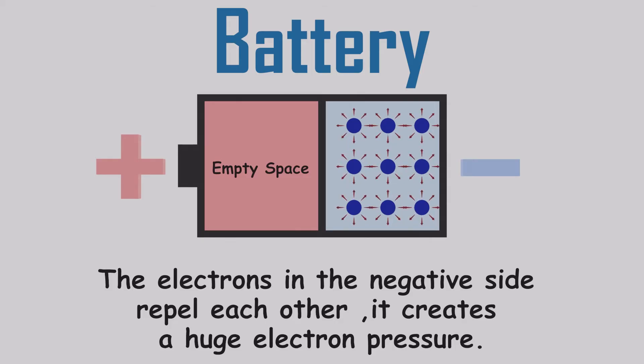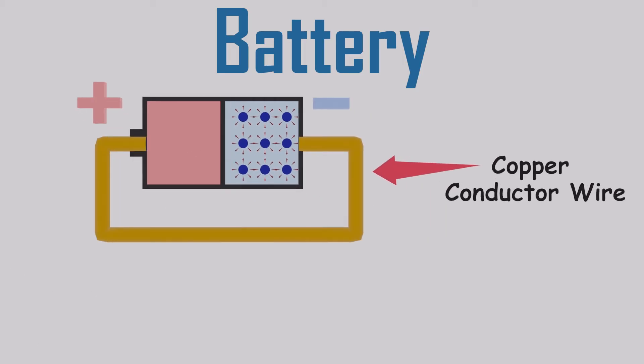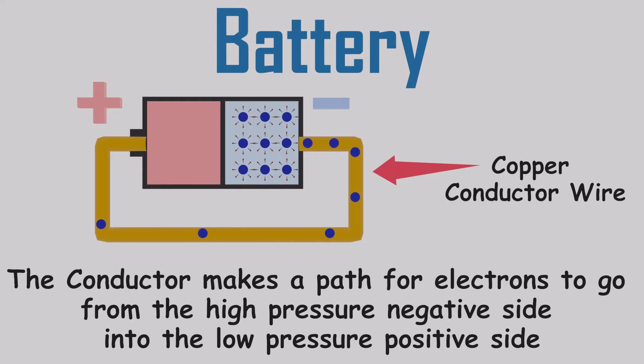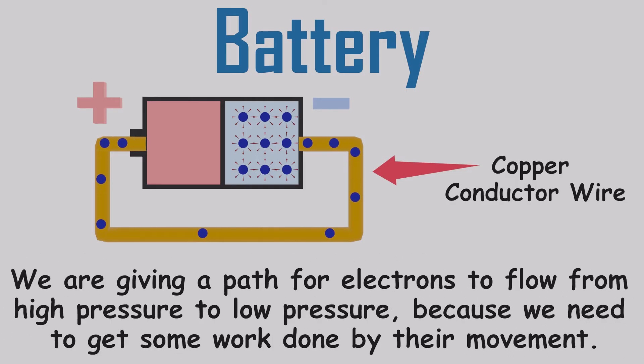As I mentioned earlier, electrons are repelling negative charges, so the electrons in the negative side repel each other and it creates a huge electron pressure. Electrons are very much likely to move into the positive side that has less electron pressure. If we consider a battery alone, there is no way to release this pressure to the positive side. But if we connect a copper wire like this, since copper is an electric conductor, the wire makes a path for electrons to go from the high pressure negative side into the low pressure positive side of the battery.